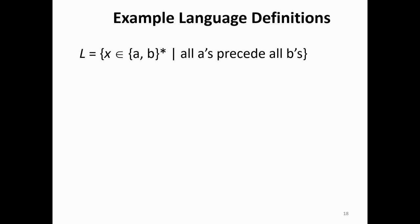Let us see some examples of language definition. Language L consists of all possible strings X which belong to alphabet AB, with the condition that all A's will precede all B's.